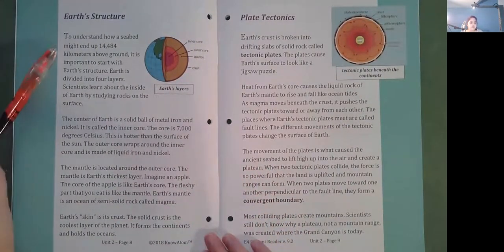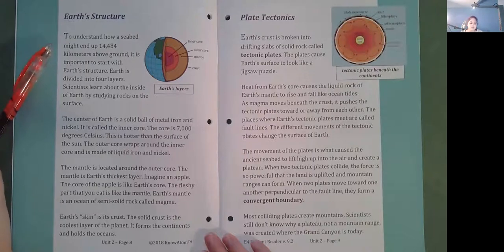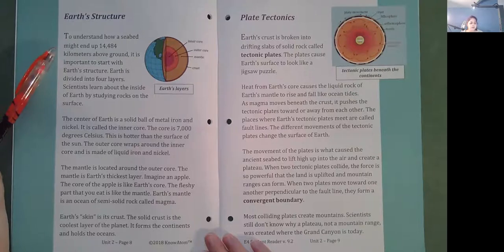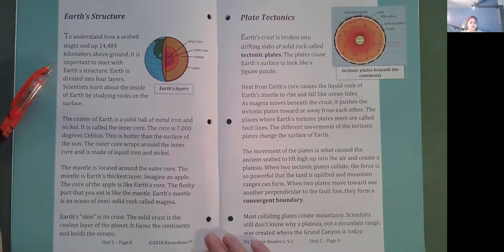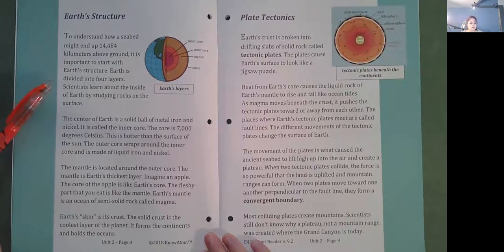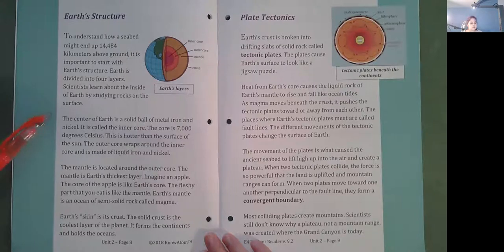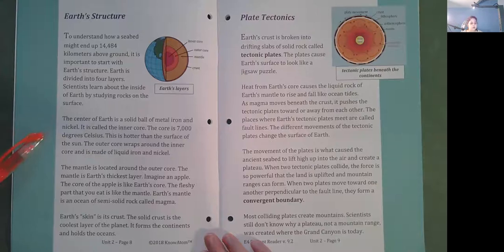Earth's structure. To understand how a seabed might end up 14,484 kilometers above ground, it is important to start with Earth's structure. Earth is divided into four layers. Scientists learn about the inside of Earth by studying rocks on the surface. The center of Earth is a solid ball of metal iron and nickel. It is called the inner core. The core is 7,000 degrees Celsius. This is hotter than the surface of the sun.